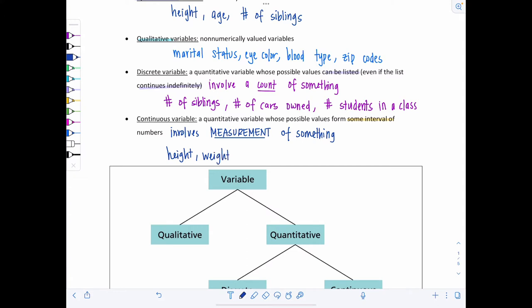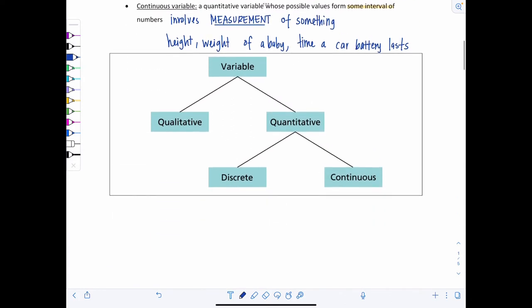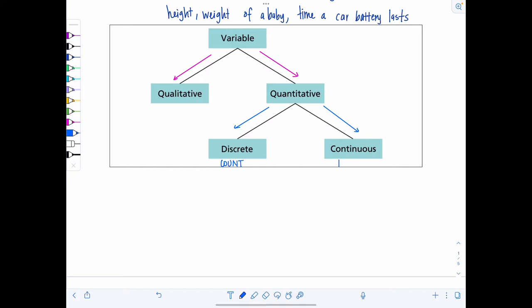The weight of a baby, that's measured. Or the time a car battery lasts. And then just to kind of break the categorization down, here's a little diagram. So we have variables, two main kinds, qualitative, this is non-numerically valued, and then quantitative. These are numerically valued. And then within quantitative, we have either discrete, think something that you count, versus continuous, something that you measure. So these you count, these you measure.